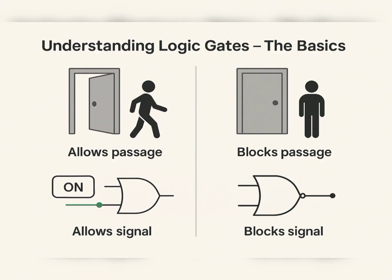As you can see on screen, there are two logic gates. One is on — it allows signal to pass through to give a high output. The other one is off — it blocks the signal, not allowing it to pass through.